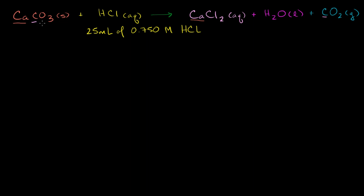On the left-hand side, we have three oxygens and no oxygens in the HCl. On the right-hand side, we have one oxygen and then two more — three oxygens on the right-hand side. Everything looks good so far. On the left-hand side, we have one hydrogen, and on the right-hand side we have two hydrogens.